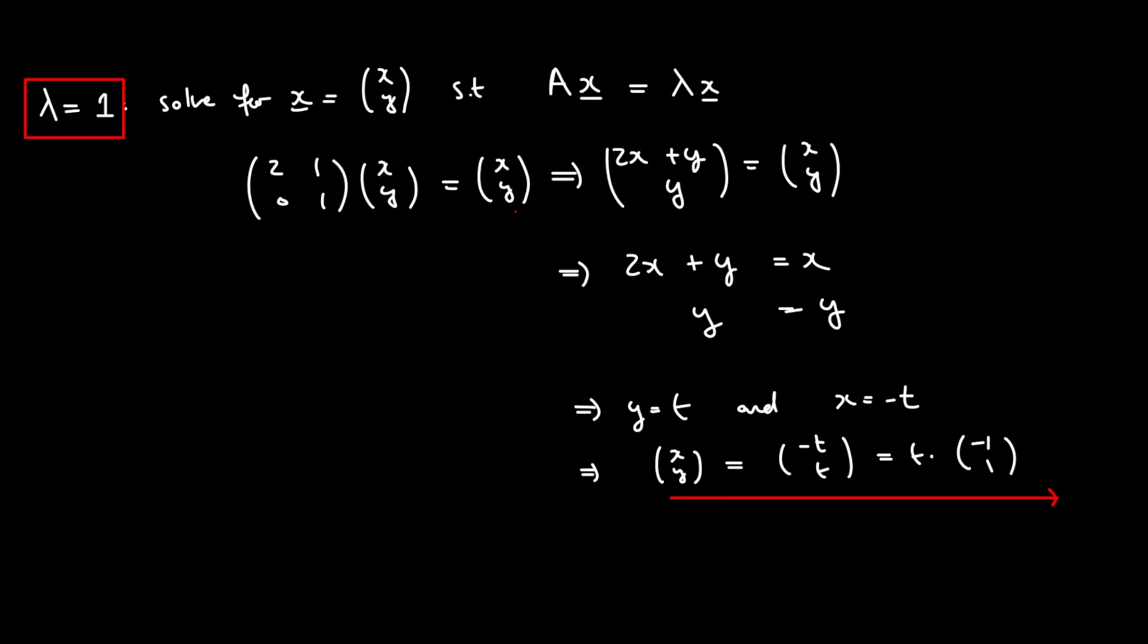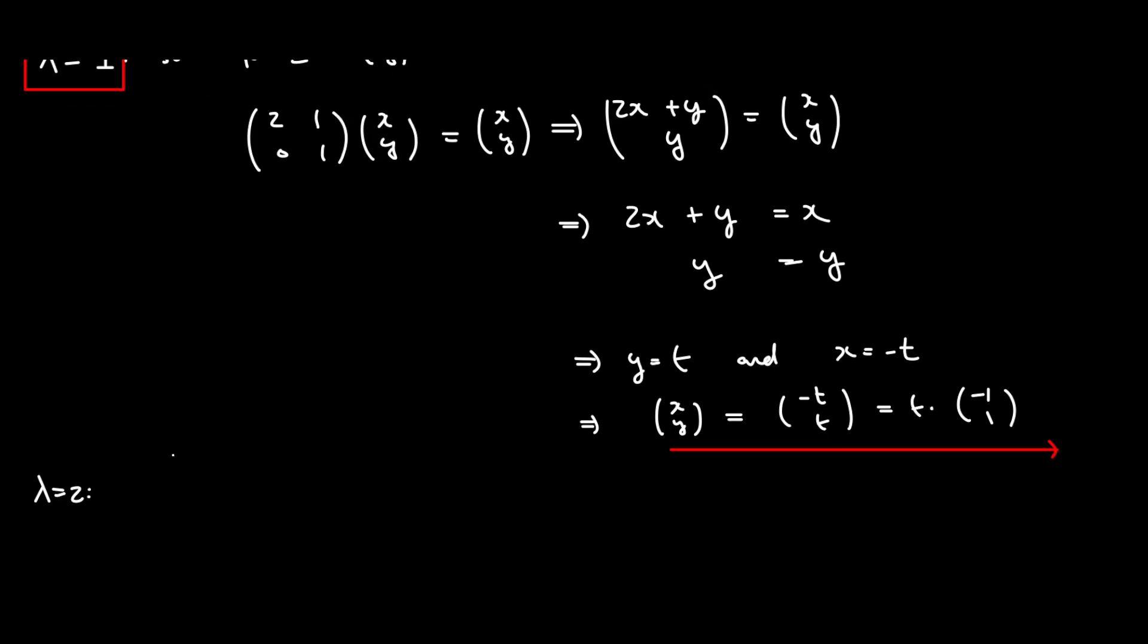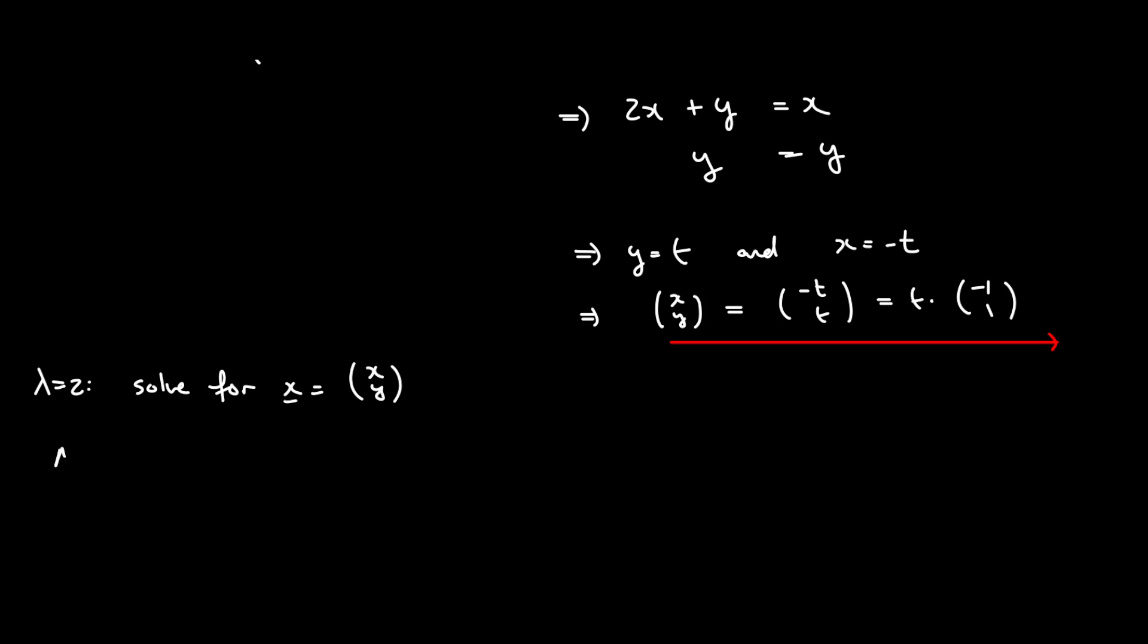Now, let's do the same thing but for lambda equal to 2. So for lambda equal to 2, it's actually going to be a little bit simpler because we're again going to solve for x equal to xy here where our equation Ax must be equal to lambda x, which is just going to tell us that 2, 1, 0, 1 times xy is equal to 2y because I'm just multiplying the lambda in when lambda is equal to 2. And here again we have, we can just write out what the simultaneous equation is going to give us. We're going to have 2x plus y is equal to 2x and then we're going to get at the bottom just simply y is equal to 2y.